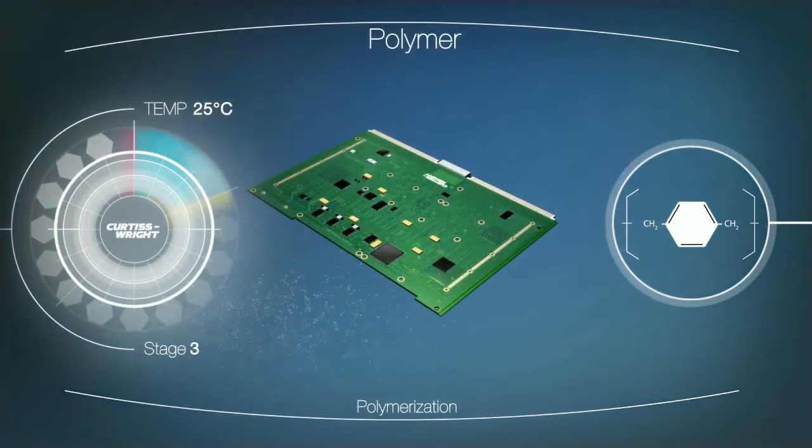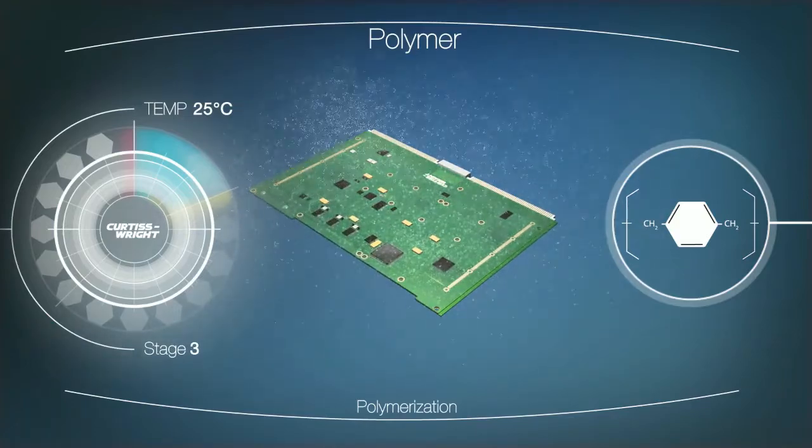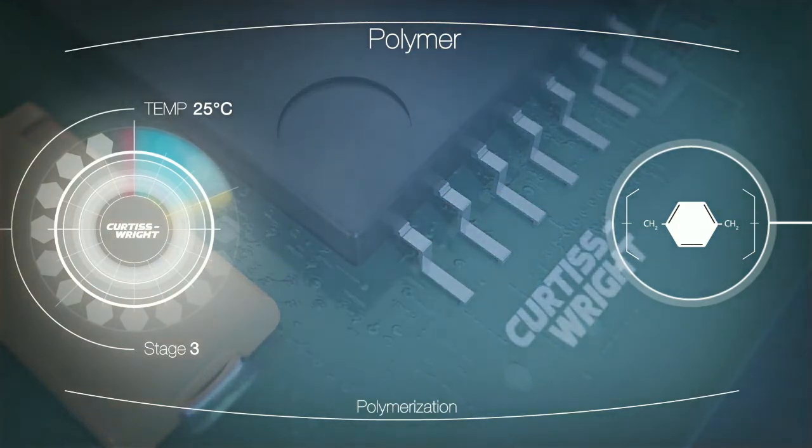At a rate of 1 to 2 microns per hour, a single clear coating builds up one molecule at a time, encapsulating all exposed surfaces. Controlled coating thicknesses ranging from less than 10 nanometers to 70 microns is achieved in a single operation.